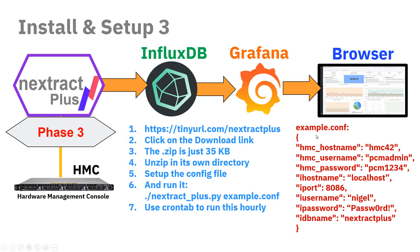There's one called example.conf — you rename this to something more sensible, maybe the hostname of the HMC. In the config file, the first three lines are the HMC details: the hostname, username, and password. We've created a user called PCMAdmin who will log in and extract the data — that helps track who is actually using the HMC. Then we have the InfluxDB settings: the hostname of where InfluxDB is running (localhost if on the same machine, but it could be a different server), the port number — 8086 is the default — then the username, password, and the database name, which is NExtract, telling the tool to put data into the right database inside InfluxDB.